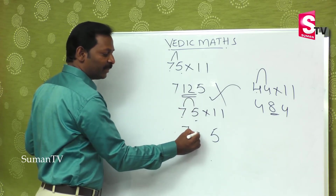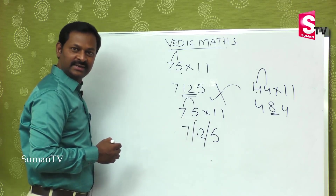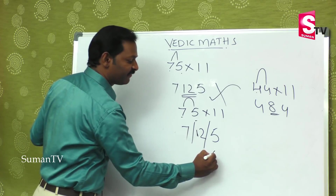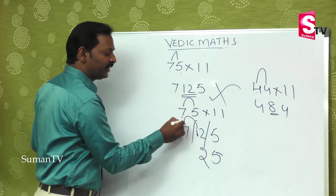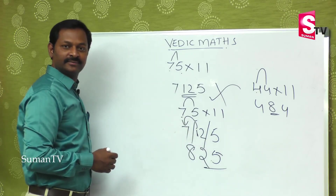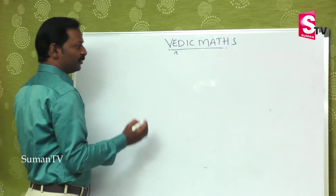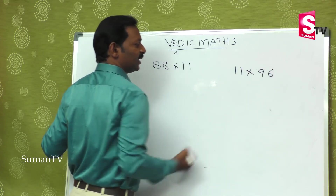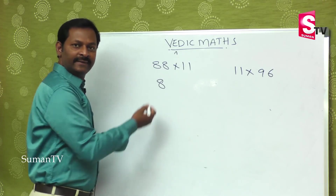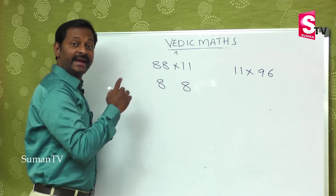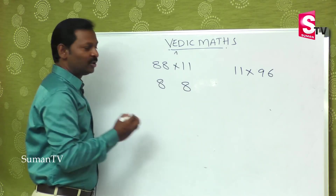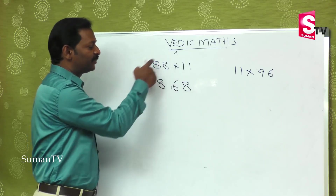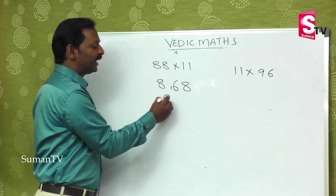We learned the balancing rule in previous classes. When the middle sum is a 2-digit number, carry the left digit and add it to the first number. Let's check one more example: 88 multiplied by 11. First digit is 8, last digit is 8, and 8 plus 8 is 16 — a 2-digit number. So 6 stays in the middle, and 1 carries over and adds to 8, making 9. The answer is 968.